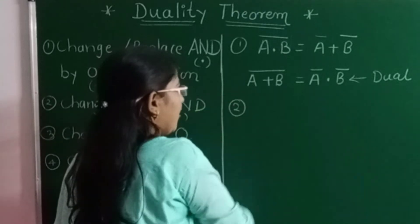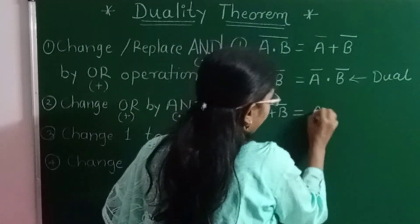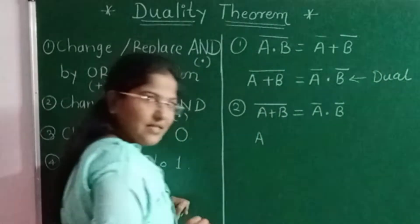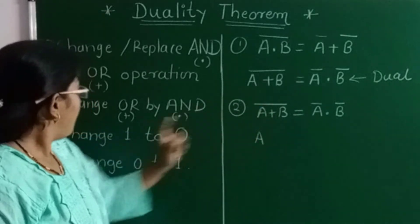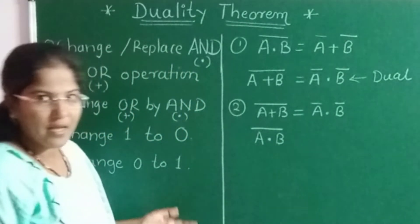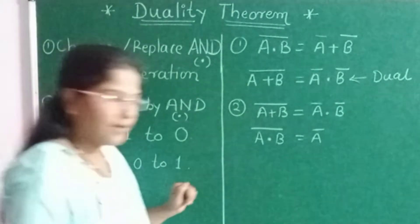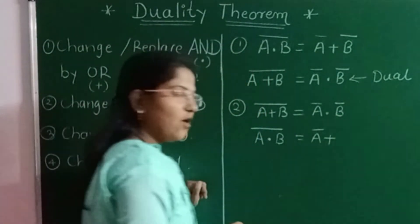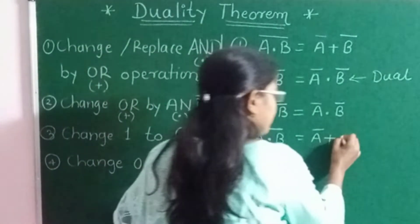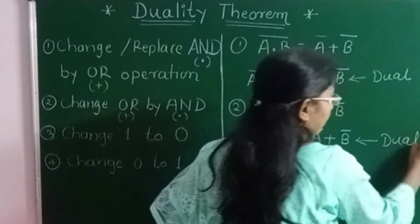Now consider the second example — the reverse of this: A + B (whole bar) = Ā · B̄. Write the first input A as it is. Plus is there, but the theorem states replace plus by dot, so I replace that plus by dot. Write the next variable with its complement as it is. Now Ā — write the first variable. Next operator is dot, so replace that dot by plus. Write the next variable B̄. This is also the dual of the given expression.